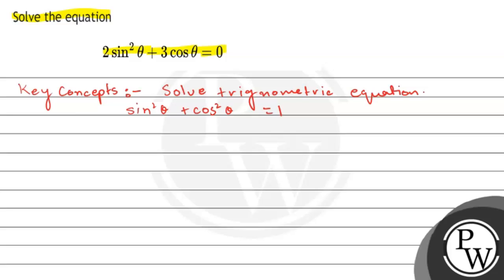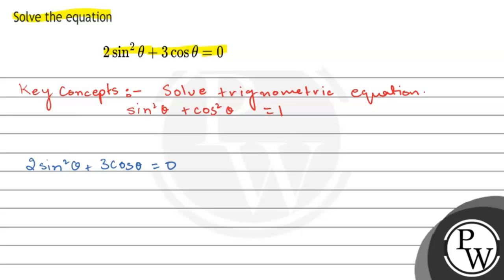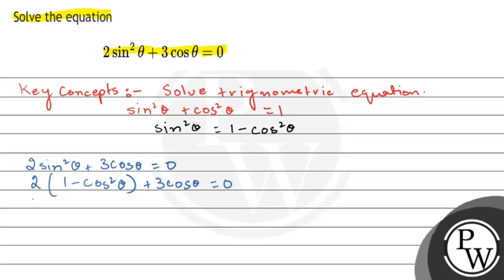So the equation we have is 2 sine squared theta plus 3 cos theta equals 0. Now, as we know sine squared theta plus cos squared theta equals 1, we get sine squared theta equals 1 minus cos squared theta. So substituting: 2 times (1 minus cos squared theta) plus 3 cos theta equals 0.